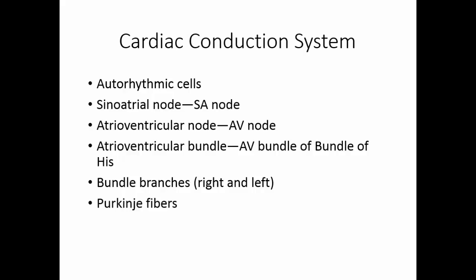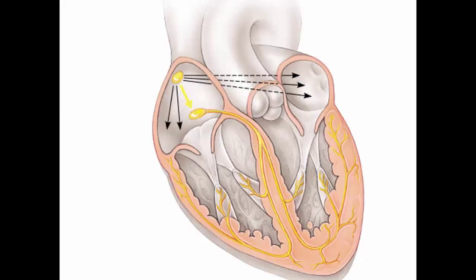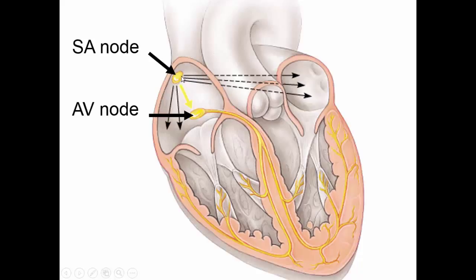The Purkinje fibers spread out across the ventricles. The SA node sits up in the very top of the right atrium. When the SA node fires, it sends its signal across both atria and to the AV node. The AV node is right at the crosshairs of the atria and the ventricles. The atria and ventricles are separated by a thick band of connective tissue, so the only way for the impulse to get to the ventricles is through the AV node.